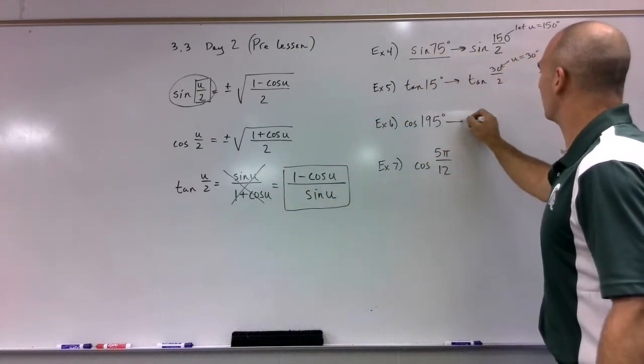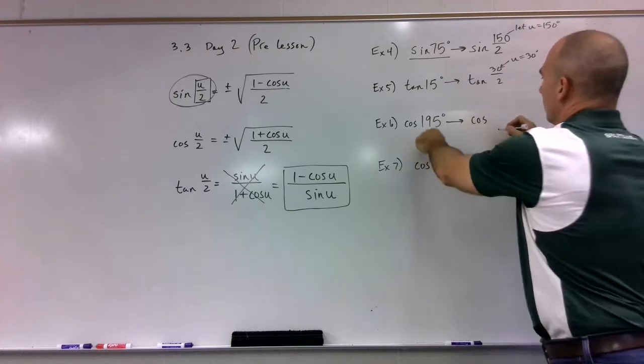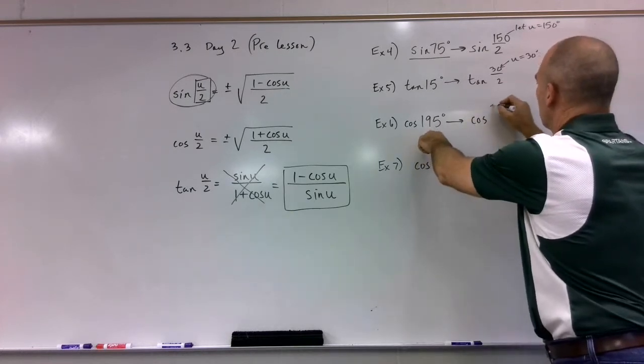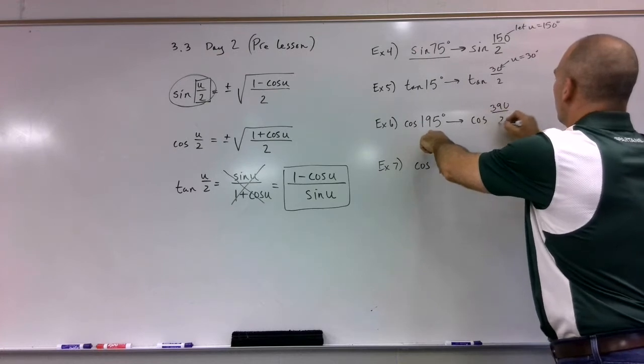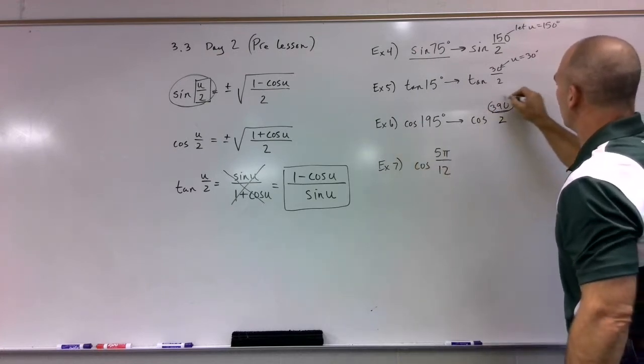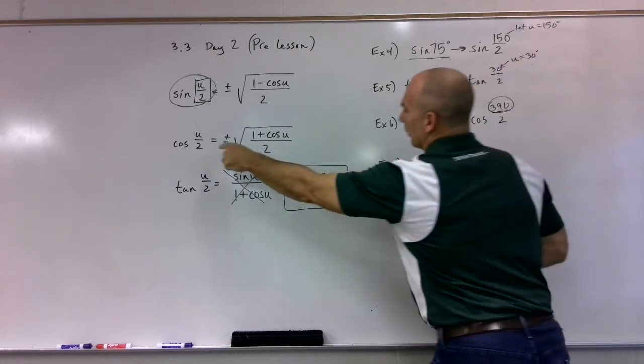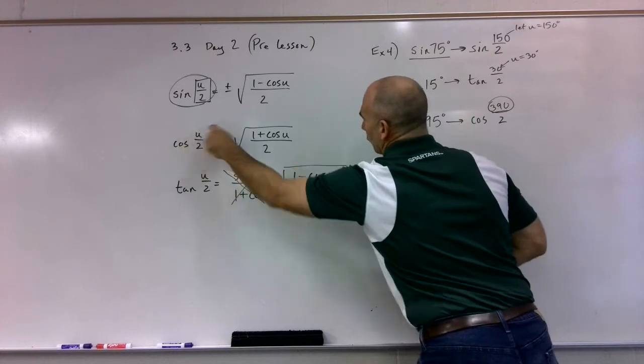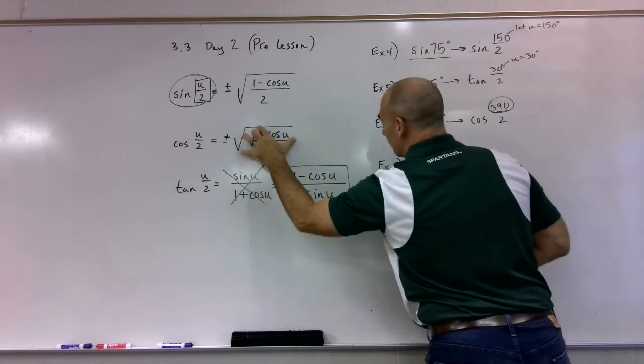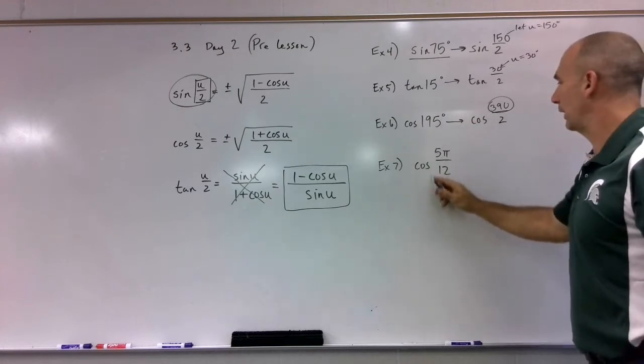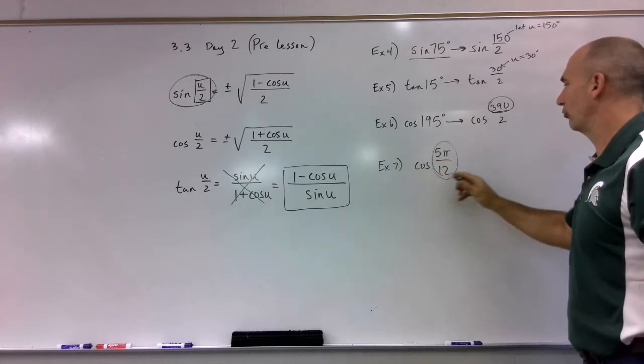So I think you can see the pattern. You're just going to double this: 390 over 2. And now this is my u, and I would plug it into the cosine of u over 2. So I put 390 right here and then simplify this. And what happens here? Well, this just challenges you and your whole radians idea.